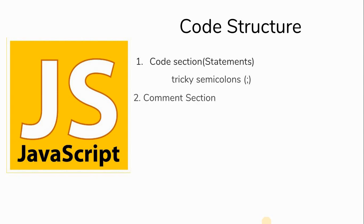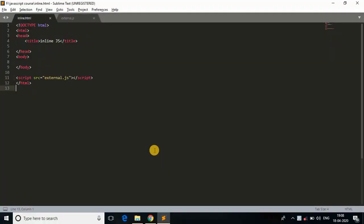It seems confusing for beginners, so I'll explain everything in this video. The second part is the comment section — we write comments, which are non-executable code, in any programming language. The first part is the code section where we write all the logic, and the next part is the comment section where we write comments that help developers understand the code.